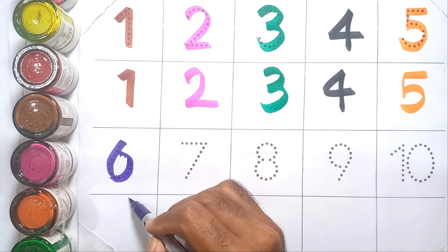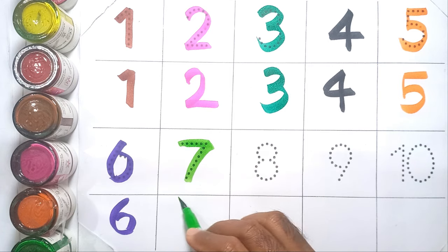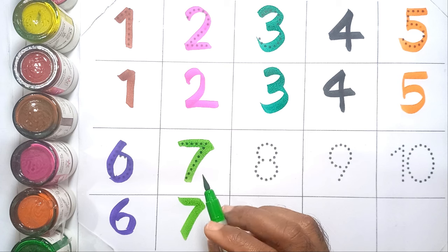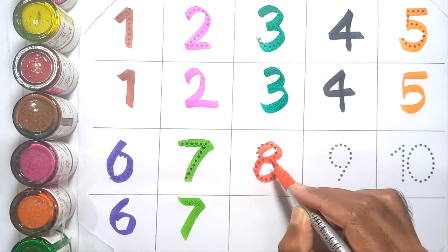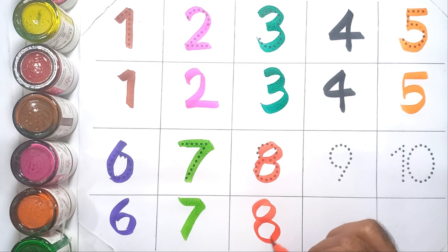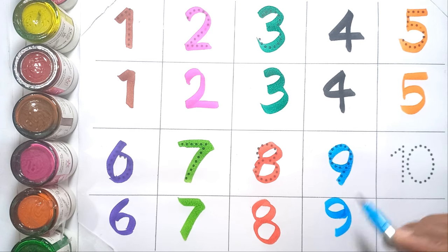Six, S-I-X, six. Seven, S-E-V-E-N, seven. Eight, E-I-G-H-T, eight. Nine, N-I-N-E, nine.